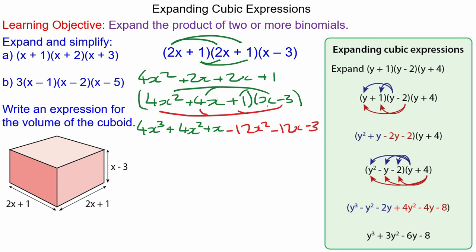Finally we collect the like terms: we have 4x cubed, then 4x squared combined with negative 12x squared makes negative 8x squared, and x minus 12x is minus 11x, minus 3. So the volume expression is 4x cubed minus 8x squared minus 11x minus 3.